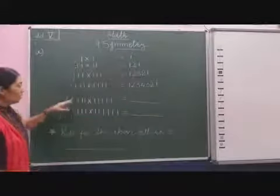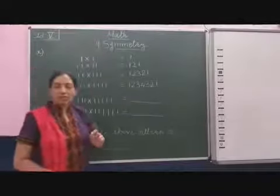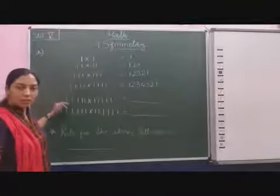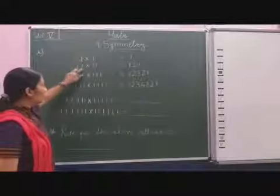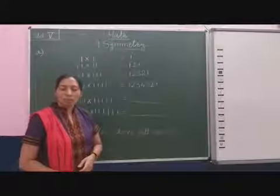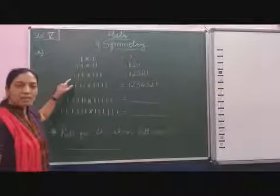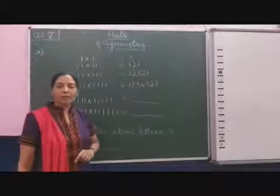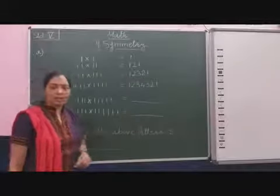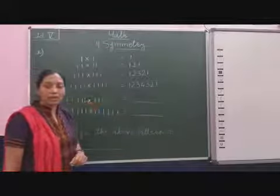Now observe that here the number 1 multiplied by 1 uses the number 1 once, then it increases by one more digit. Here 11 into 11, so we get the product as 121. One more digit is added in the third term, so 111 multiplied by 111 — the product is 12321.